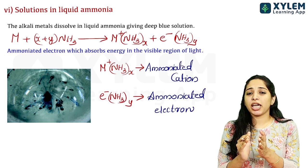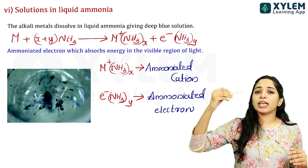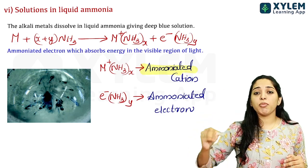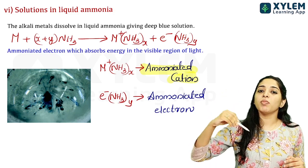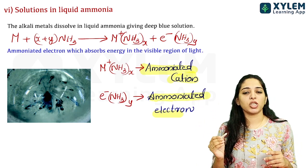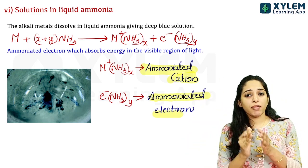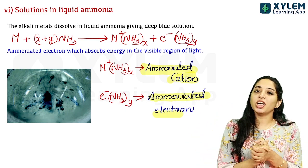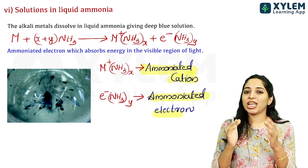They have to use the ionization of alkaline metals. Ammonia molecules are formed in ammonia. Ammonia electrons are formed in the visible region and emit in the blue region. That's why alkaline metals in ammonia solution appear blue.